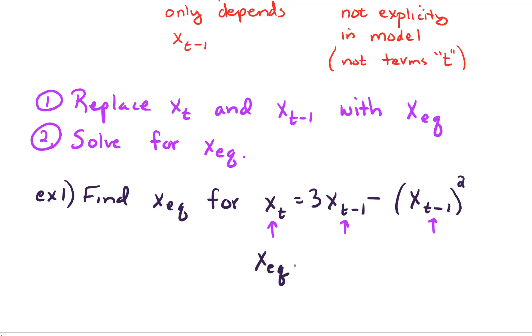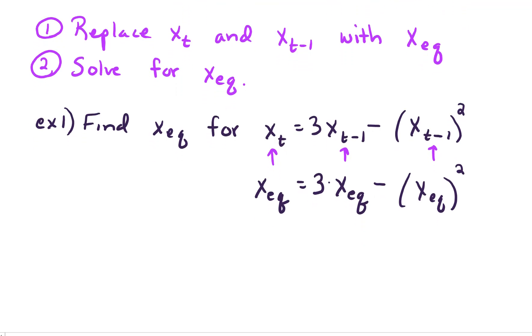So I'm looking at x sub eq equals 3 times x sub eq minus x sub eq squared. Next thing I want to do is I want to solve for x sub eq. Well, let's see. Let's start to collect like terms. So I'm going to subtract x sub eq from both sides. On the left hand side I have 0. And on the right hand side I have 3 x sub eq minus 1 of them. I'm only left with 2 x sub eq minus x sub eq squared.